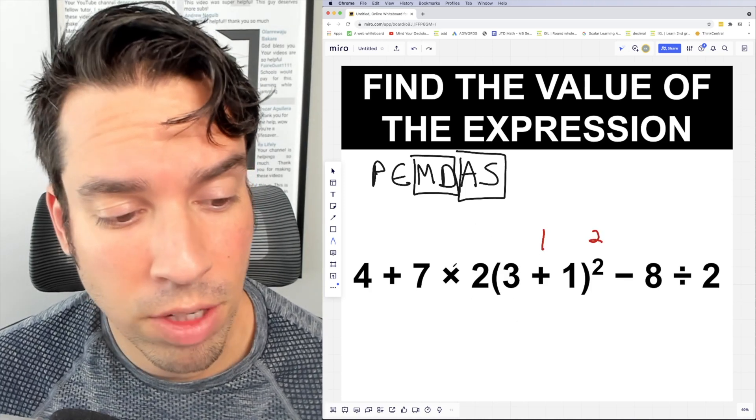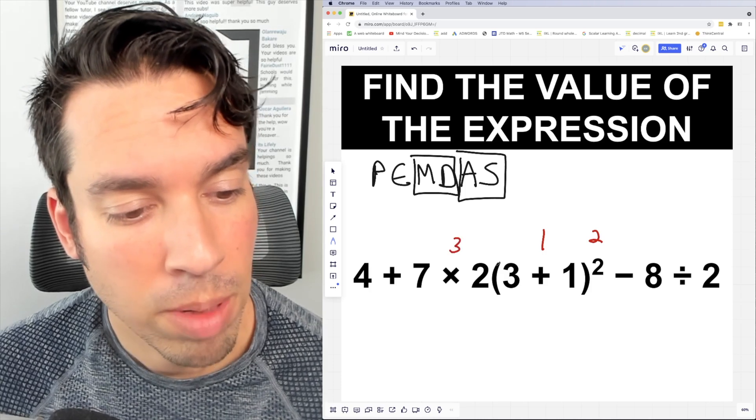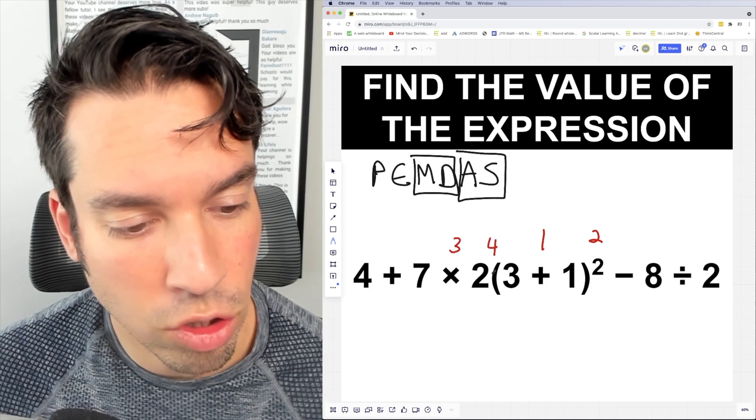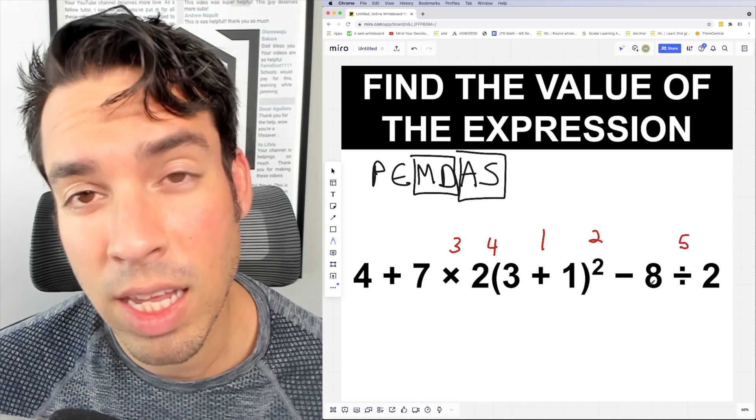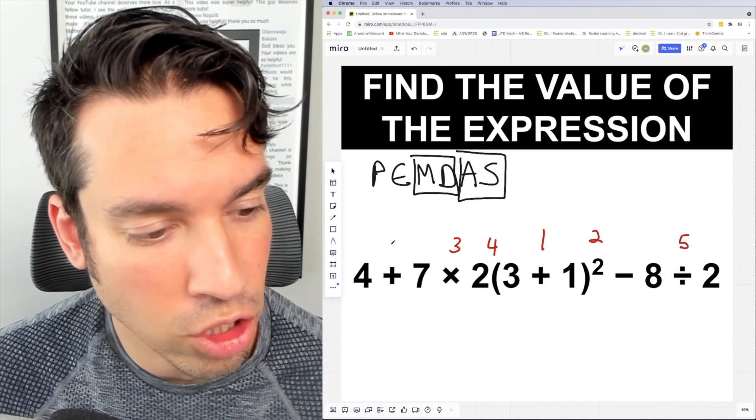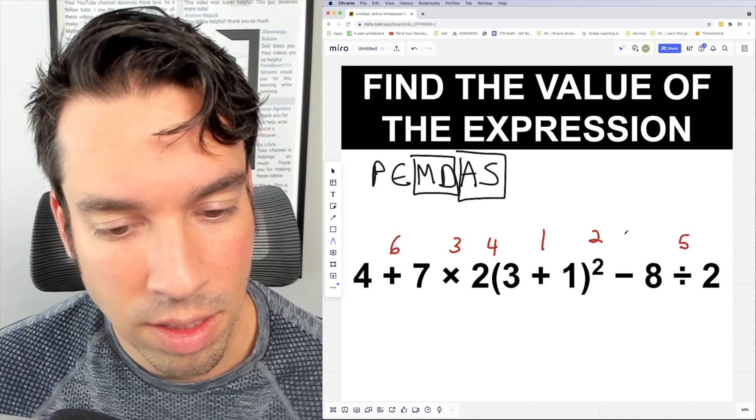Then I've got multiplication and division. So I've got three. By the way, this is a multiplication right here, two times this parentheses, four and five. And last but not least, addition and subtraction, six and seven.